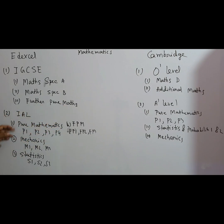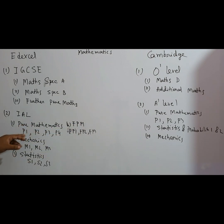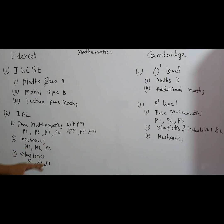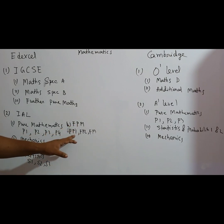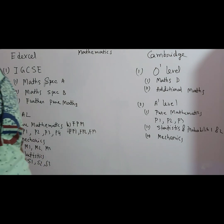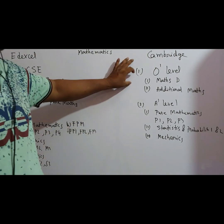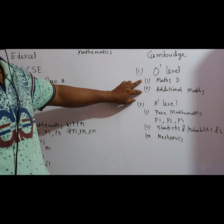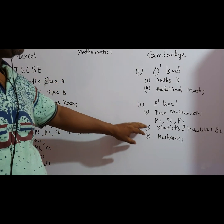In IAL there are many papers: pure mathematics, mechanics, statistics, and further pure maths. The pure maths series has P1, P2, P3, P4; mechanics has M1, M2, M3; statistics has S1, S2, S3; and further pure maths has FP1, FP2, FP3. In CAMBRIDGE at O level, there is maths D and additional maths.